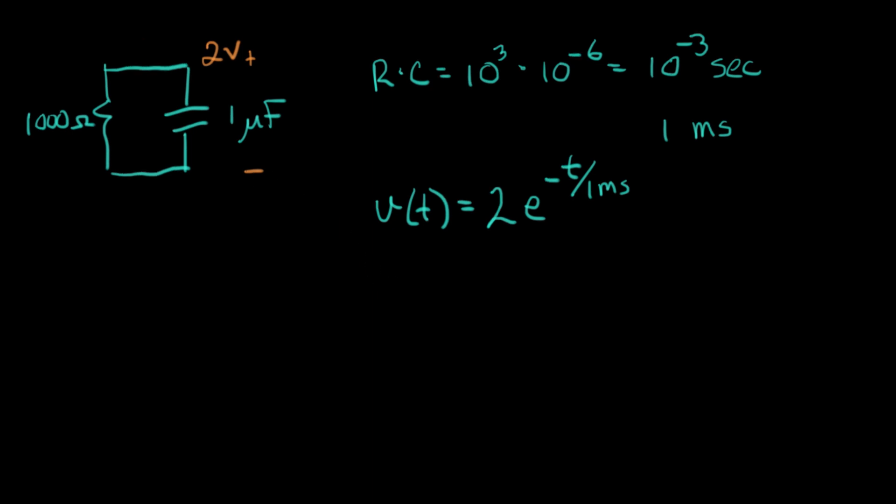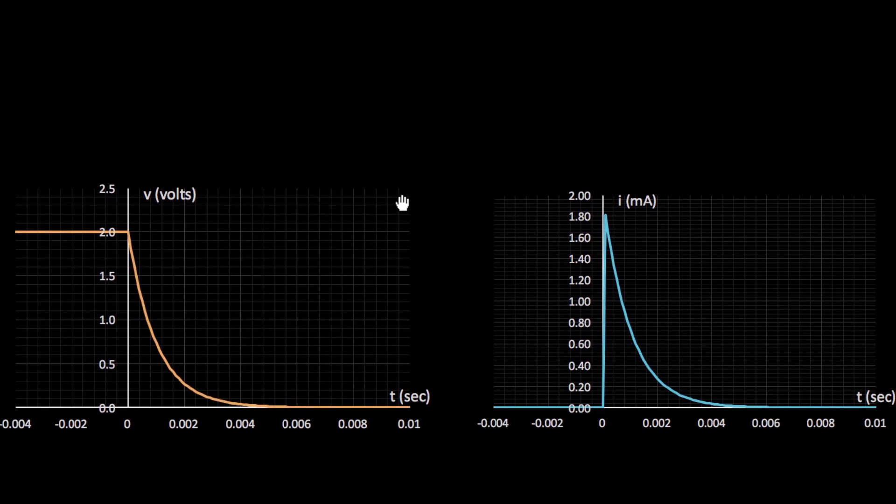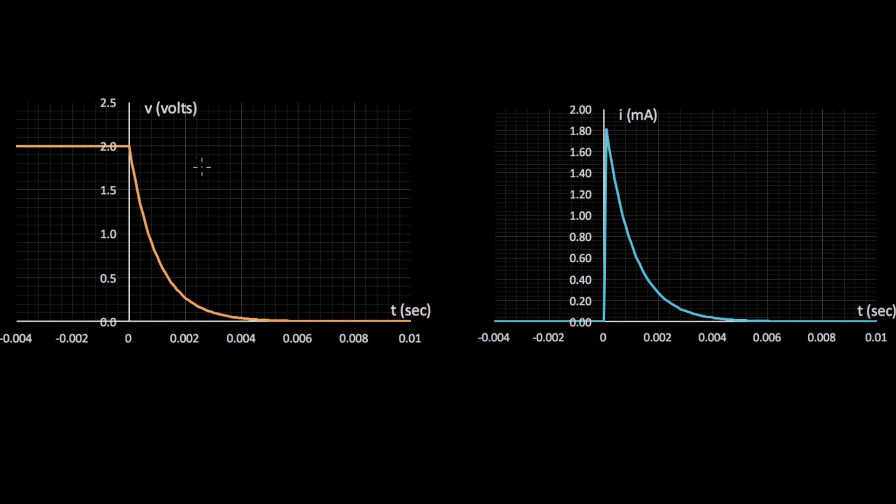Now let me show you what that looks like. This is V of T on this side. Equals two E to the minus T over one millisecond. And you can see it starts at two volts and then sags down as we predicted. And that's an exponential curve.